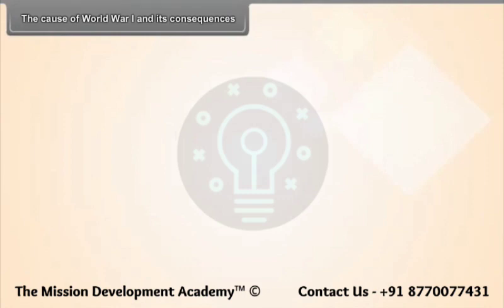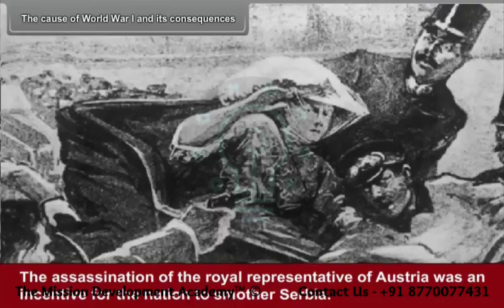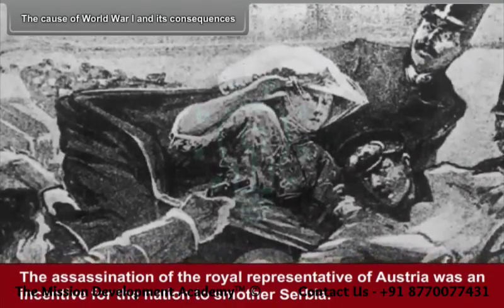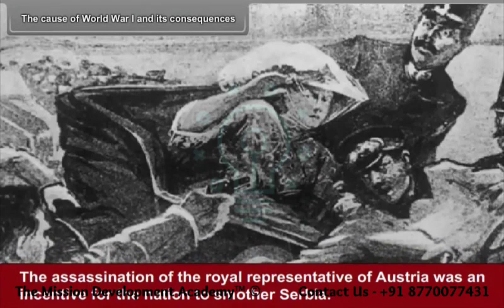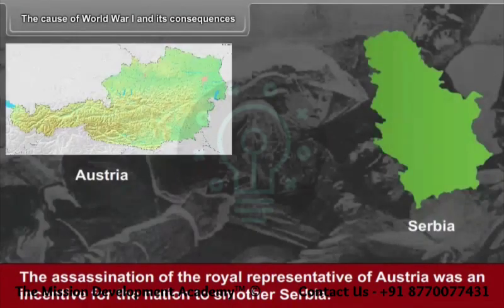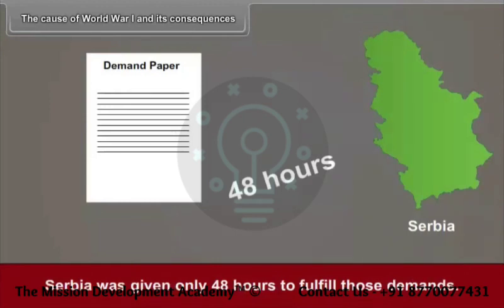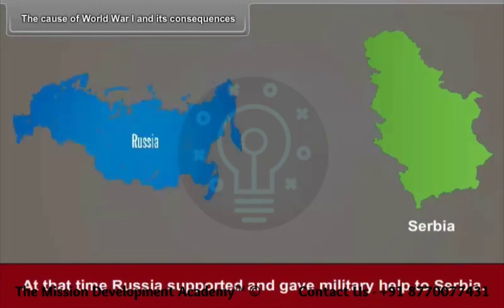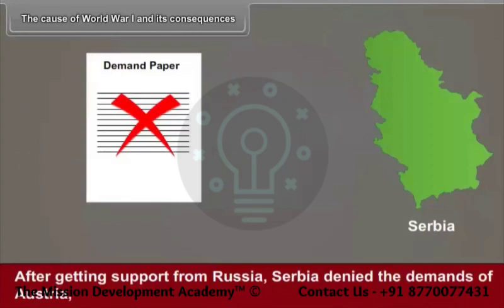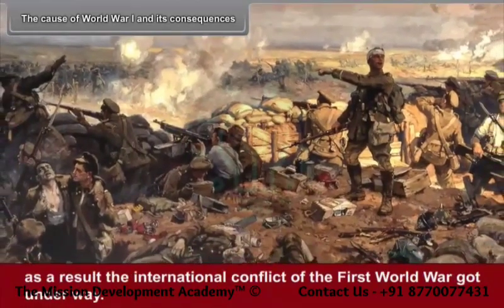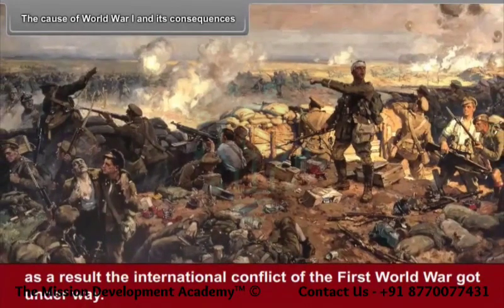The cause of World War I and its consequences: The assassination of the royal representative of Austria was an incentive for the nation to smother Serbia. Austria imposed unacceptable demands on Serbia. Serbia was given only 48 hours to fulfill those demands. Russia supported and gave military help to Serbia. After getting support from Russia, Serbia denied the demands of Austria. As a result, the international conflict of the First World War got underway.